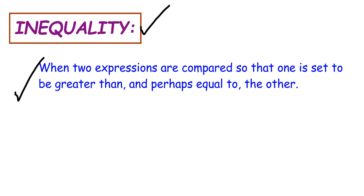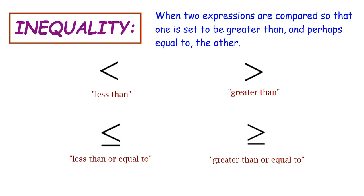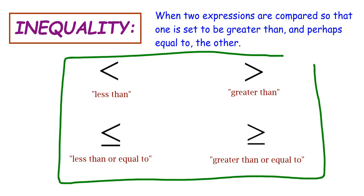With certain inequality signs we may also allow the two values to be equal, but we're not looking for perfect balance like with an equal sign — we want a particular set of off-balance. There are four symbols: less than, greater than, less than or equal to, and greater than or equal to.